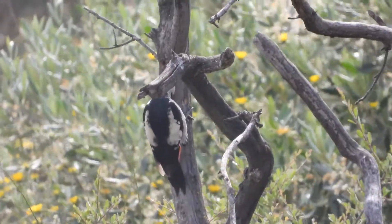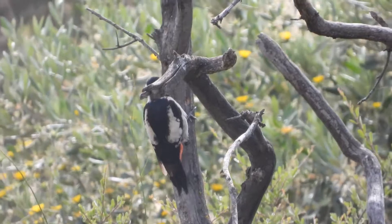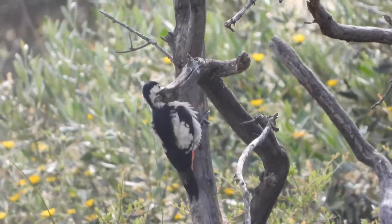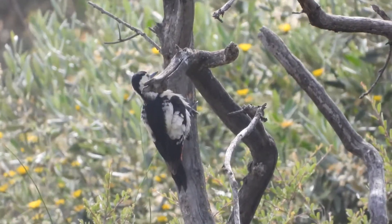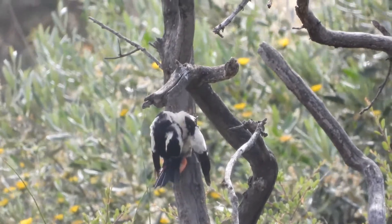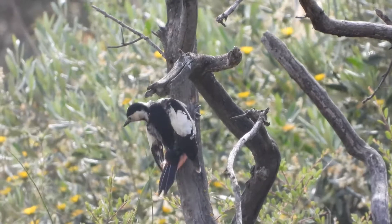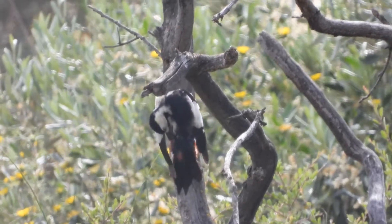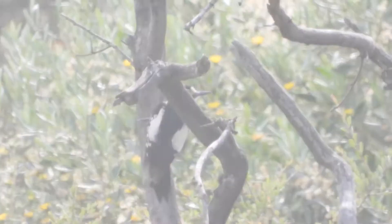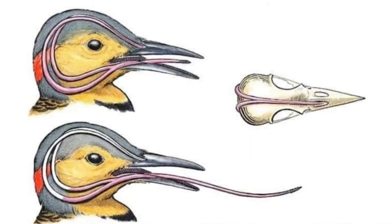يدق نقار الخشب بمنقاره بسرعة تصل إلى سبعة أمتار في الثانية، وهو ما يعادل سرعة 25 كيلومتراً في الساعة، وهي سرعة كفيلة بإحداث ارتجاج في مخ الطائر. ولكن ما يحميه من هذا الخطر هو حزام يحيط برأسه عبارة عن امتداد للسانه، يبدأ من رأس اللسان وينتهي بالجزء العلوي للمنقار.